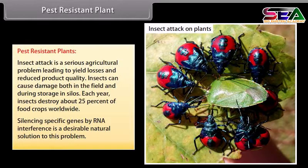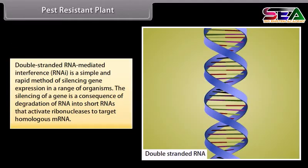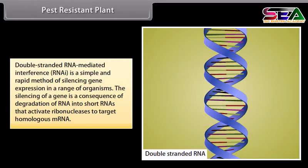Silencing specific genes by RNA interference is a desirable natural solution to this problem. Double-stranded RNA-mediated interference, or RNAi, is a simple and rapid method of silencing gene expression in a range of organisms. The silencing of a gene is a consequence of degradation of RNA into short RNAs that activate ribonucleases to target homologous mRNAs.